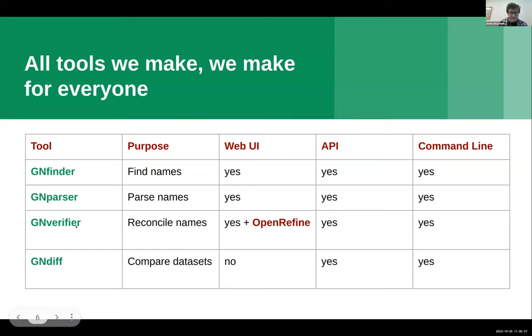GenVerifier allows to reconcile names. On top of everything else, it also has OpenRefine interface that is able to be incorporated into OpenRefine. And we have GNDif, which is the newest one, it doesn't have web yet, but it has API and command line, and it allows you to compare two datasets together, without any database, without any internet.